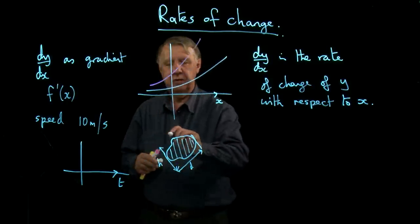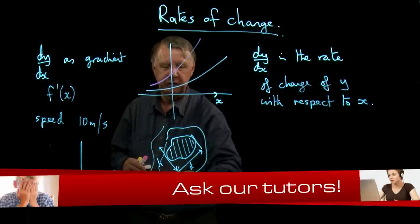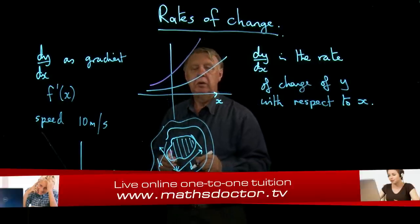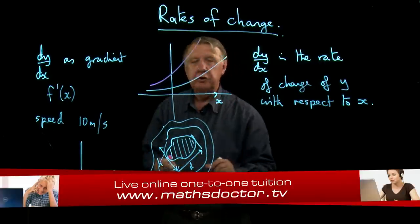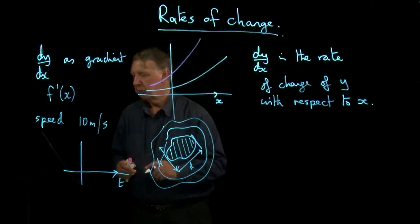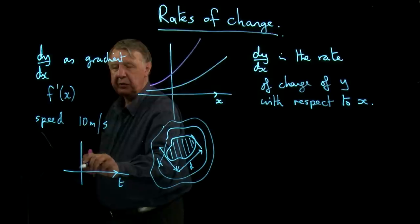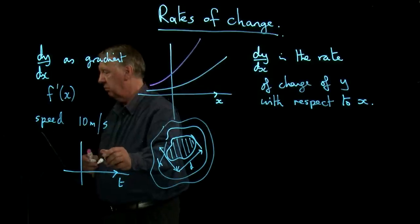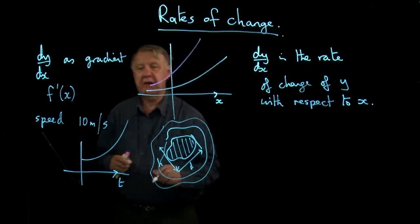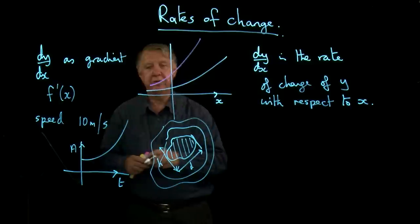So as time passes on, the spillage gets bigger. And I could plot a graph of that spillage. And it might be doing something like that. Now what would that represent? Well supposing that represented the area of the spillage.